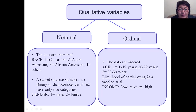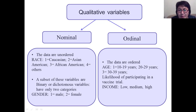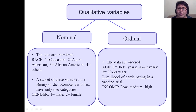Qualitative variables are divided into nominal and ordinal. Nominal variables have unordered data. For example, race: one equals Caucasian, two equals Asian American, three equals African American, four equals other. A subset of these variables are binary or dichotomous variables, which have only two categories, such as gender: male and female.